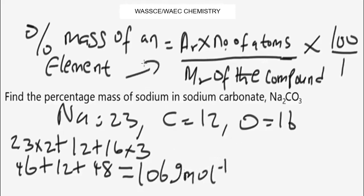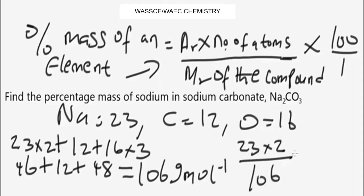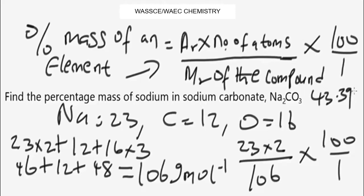Now applying the formula: the relative atomic mass of sodium is 23, and there are two atoms of sodium, so it's 23 × 2 = 46, divided by 106, times 100. This gives approximately 43%. That is the percentage by mass of sodium in sodium carbonate.